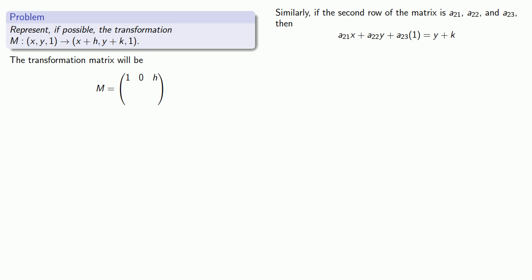And so we can use this to find a21, a22, and a23. And so we find a21 is 0, a22 is 1, and a23 is equal to k. And there's the second row of the matrix.